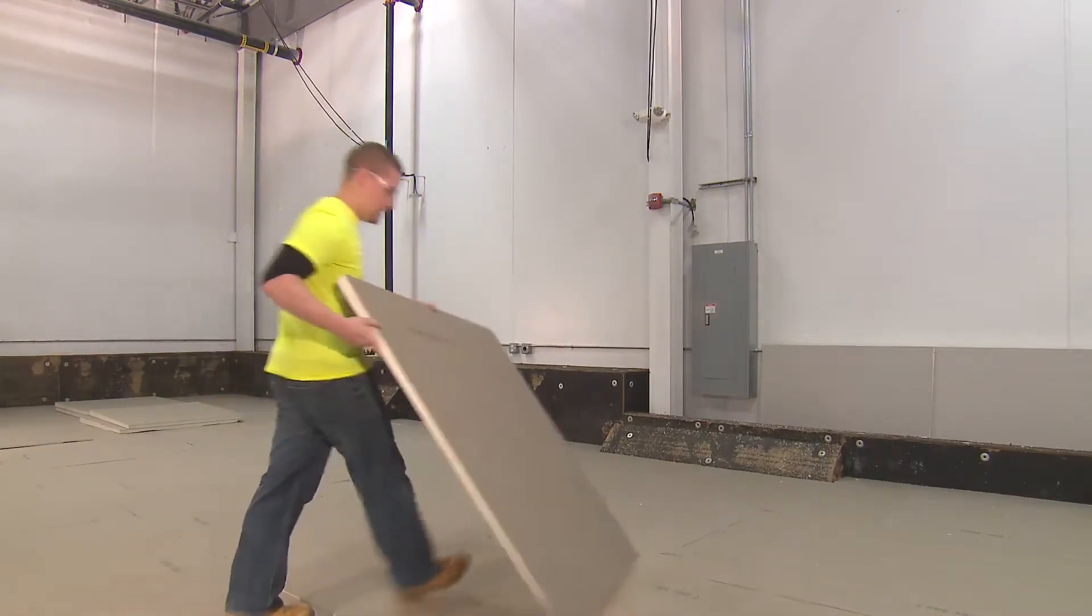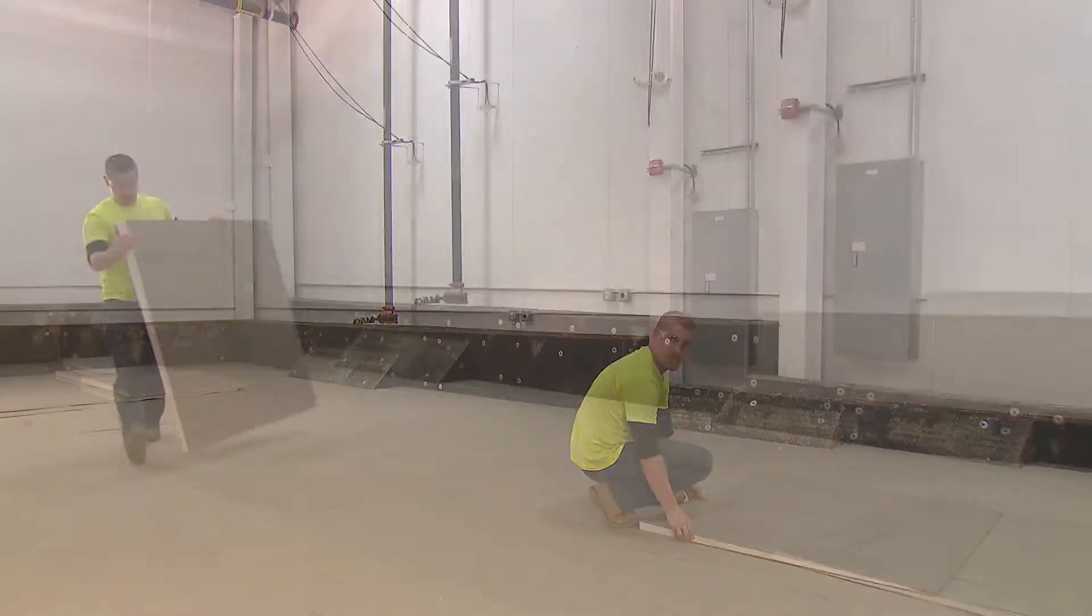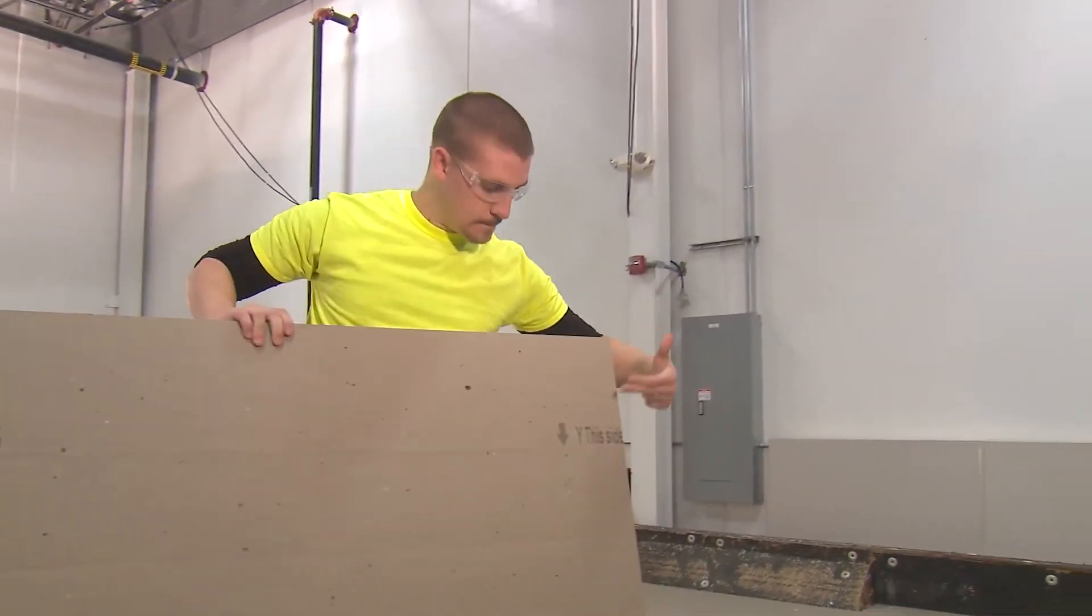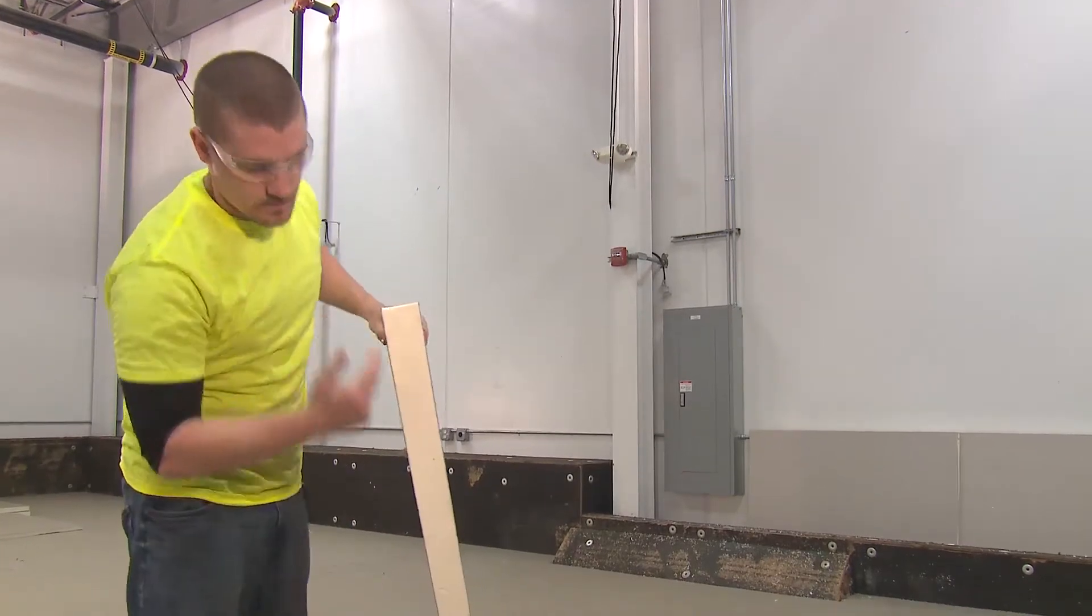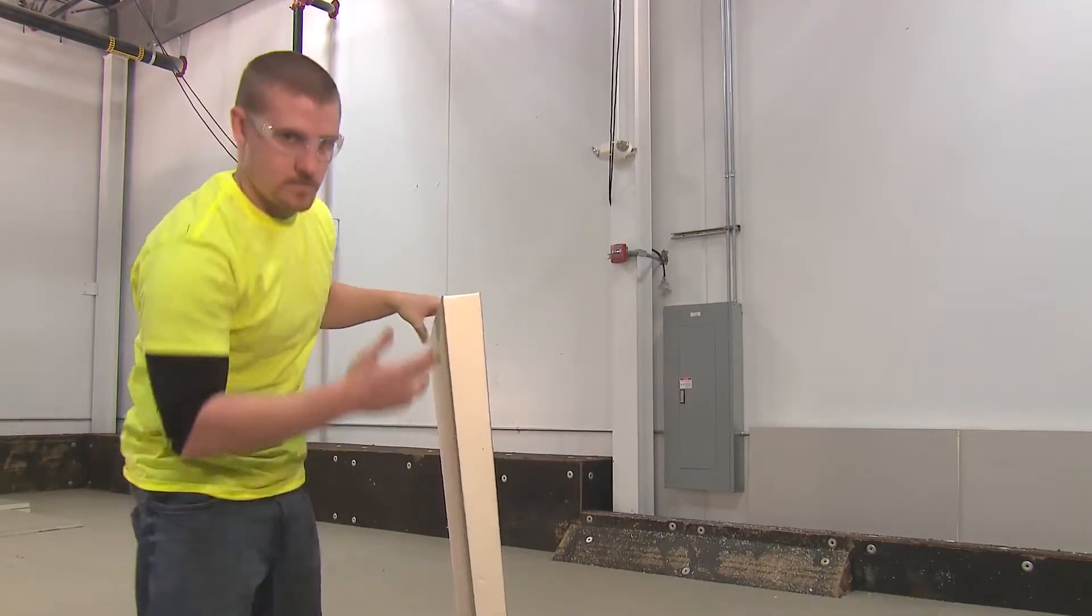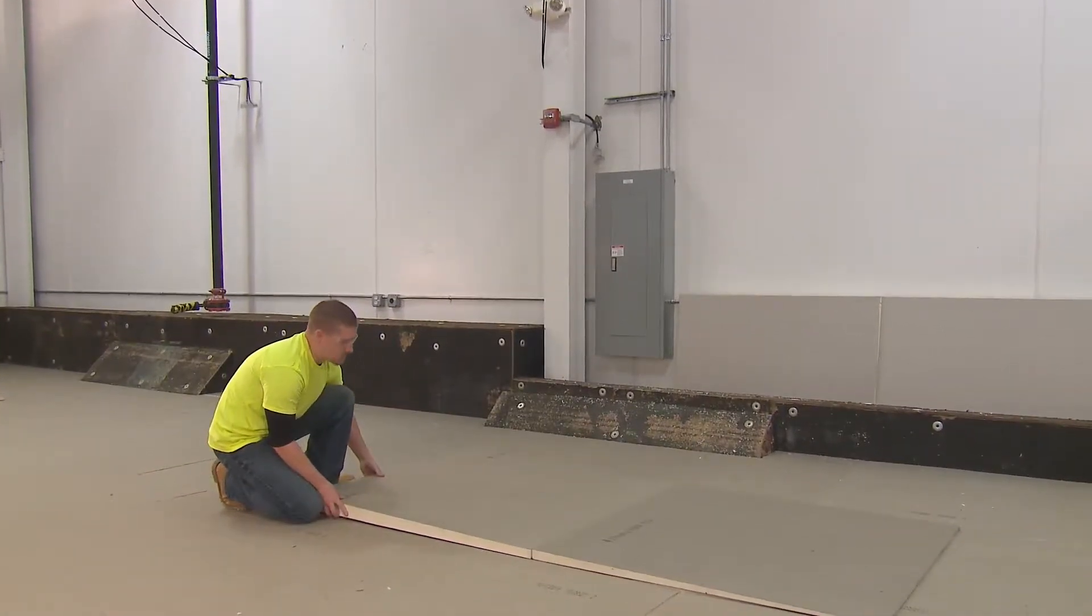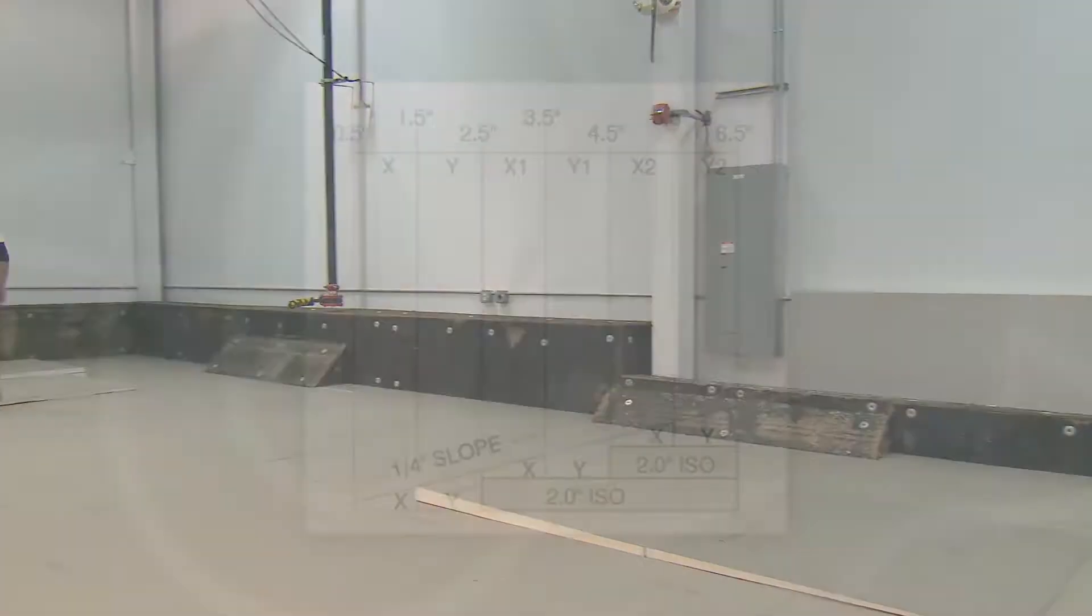We lay the low end of the panel toward the drainage point, which can be a scupper, drain, drip edge, or gutter. The second piece of a standard 1/4 inch sequence is a Y panel, which runs 1.5 inches to 2.5 inches. Lay the 1.5 inch low edge of the Y panel against the 1.5 inch high side of the X panel we just laid down.